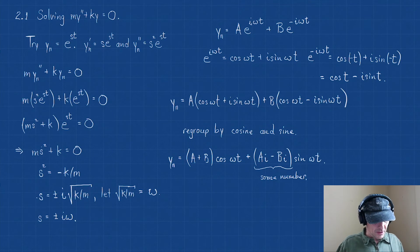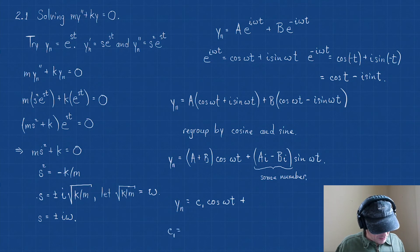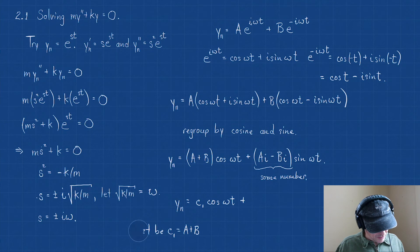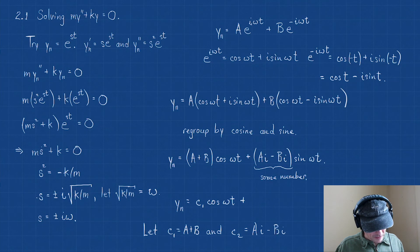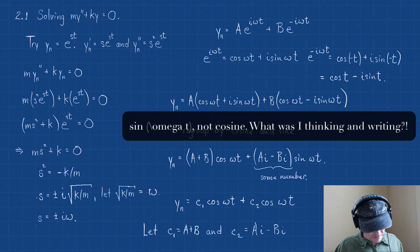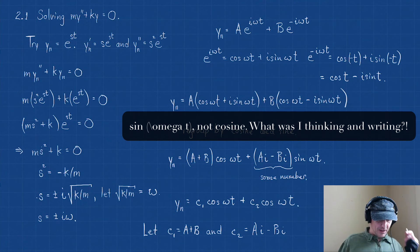So what we're going to do is our general solution to this second-order differential equation is y_n = c₁·cos(ωt) + c₂·sin(ωt), where we'll let c₁ = A + B and c₂ = A·i - B·i.